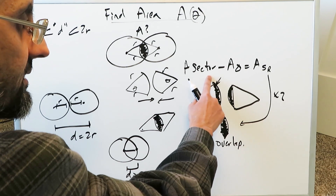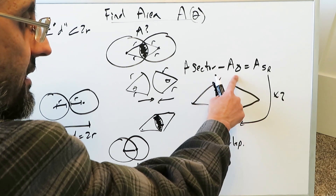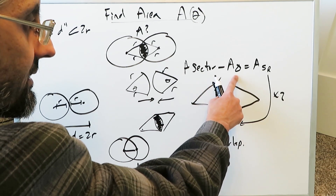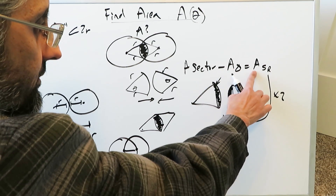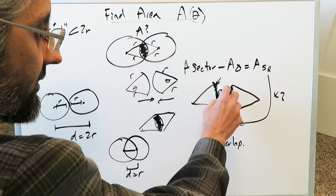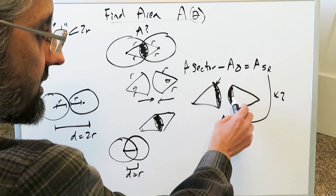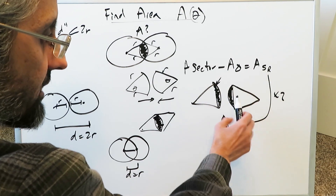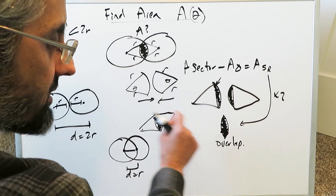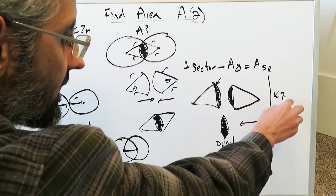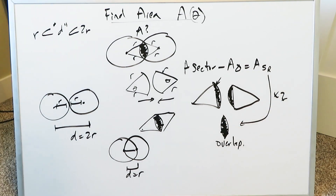Find the area of the sector, which is easy. The area of the triangle is a little more difficult. You take the difference of the two to get the area of a single shaded region, multiply it by two because these combine together, and you get the complete overlap. That's the scheme we will use.